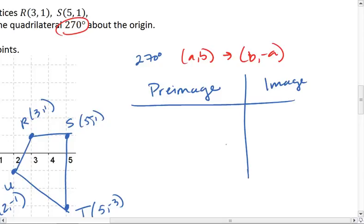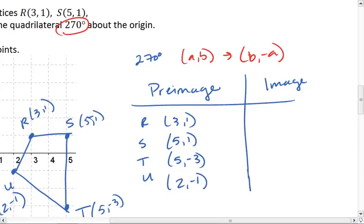Our points are R, S, T, and U. There we go. So there's all four points with all their ordered pairs.